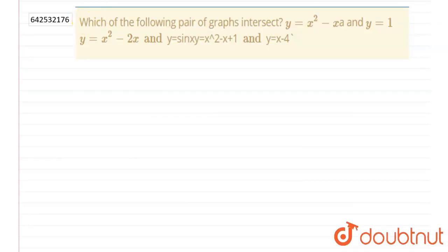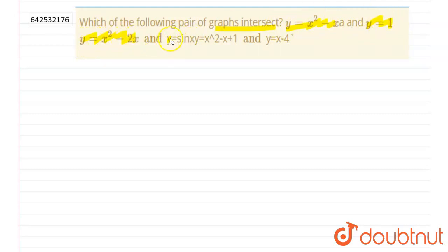Let's start the solution. The question asks: which of the following pairs of graphs intersect? The first pair is y = x² - x and y = 1. The second pair is y = x² - 2x and y = sin x. The third pair is y = x² - x + 1 and y = x - 4.